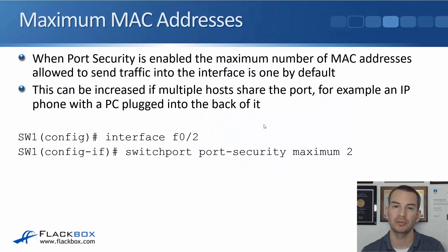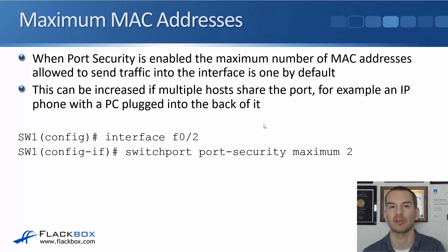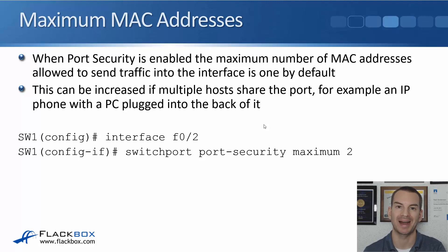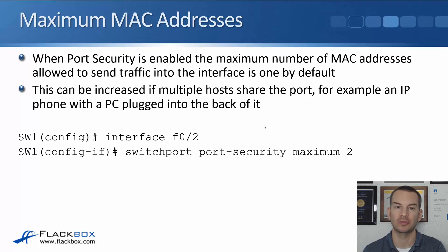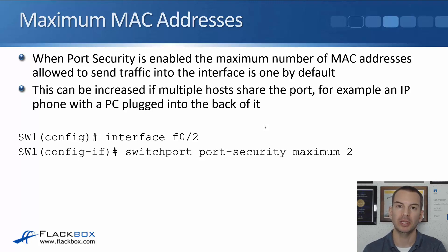In the last couple of lectures, you learned how you can use port security to prevent unauthorized devices like wireless access points and switches on your network. In this lecture, you'll learn how you can use port security to lock interfaces down to a particular host based on its MAC address. Before we get to that, this works in conjunction with the maximum MAC addresses setting of port security. When you enable port security on an interface, this defaults to one.